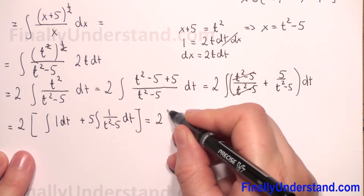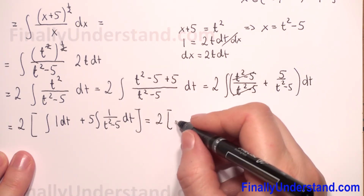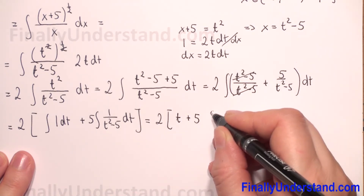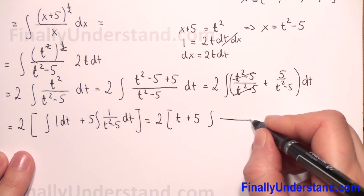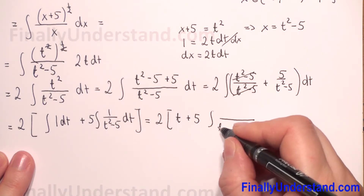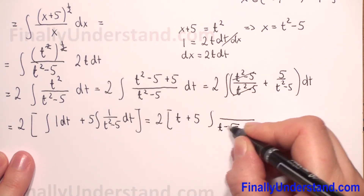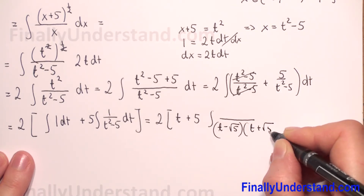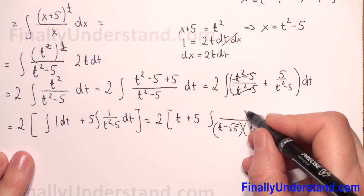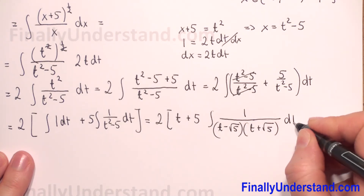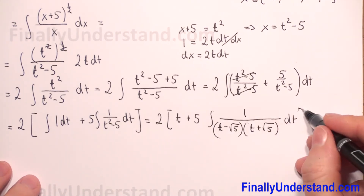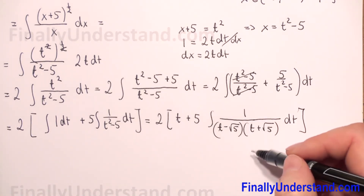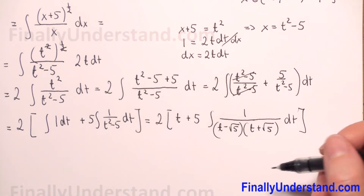We have 2 times: the integral of 1 with respect to t equals t, plus 5 times the integral of 1 over (t squared minus 5). We rewrite the denominator in factored form as t minus square root of 5 times t plus square root of 5. We will now rewrite this rational fraction as a sum of partial fractions.